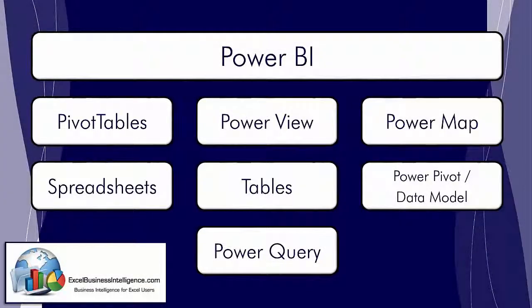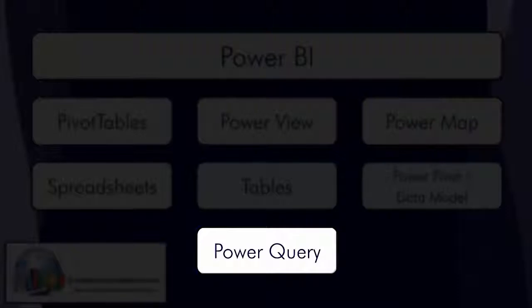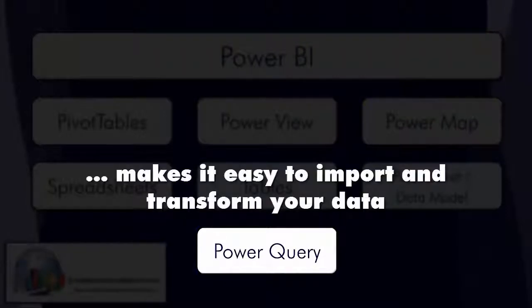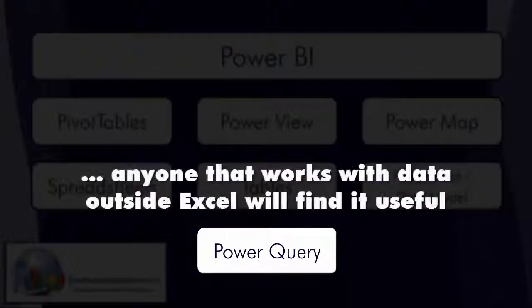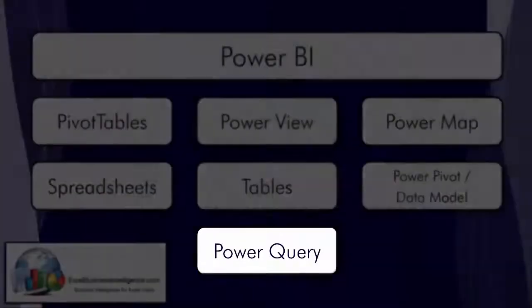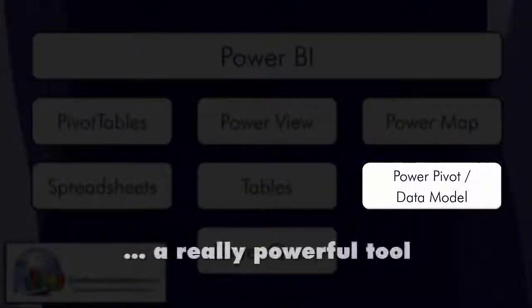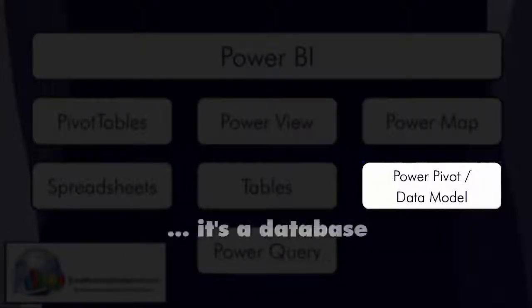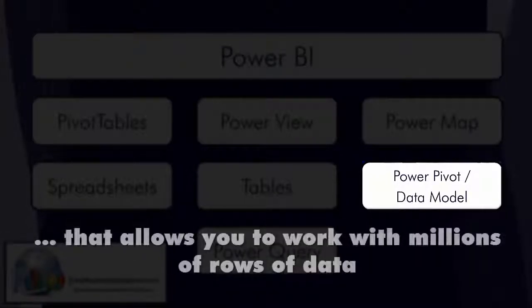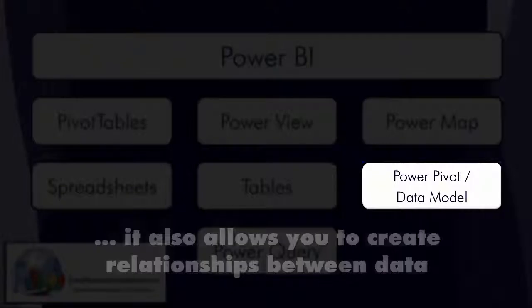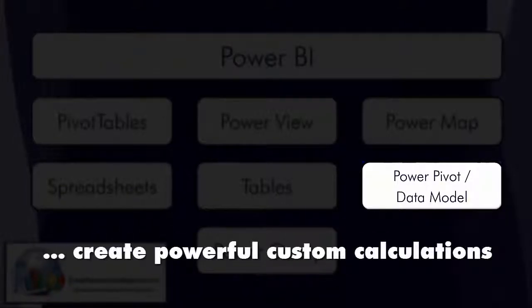Looking at the other technologies on the slide, at the bottom is a technology called Power Query. Power Query makes it easy to import and transform our data, so anybody who works with data outside of Excel would find Power Query to be a very useful tool. We then have Power Pivot and the data model. Power Pivot is a really powerful tool — essentially a database allowing us to work with millions of records, create relationships between data, and produce powerful custom calculations.